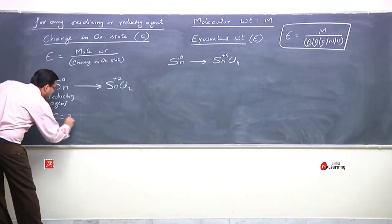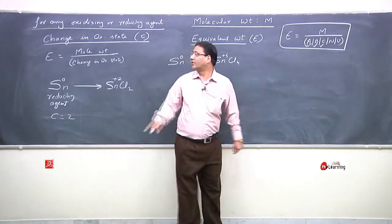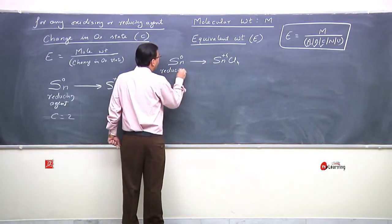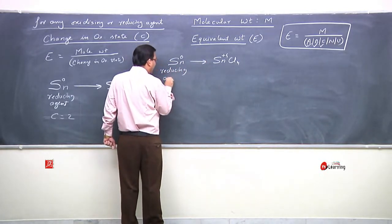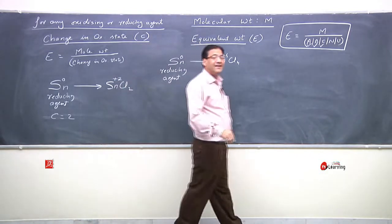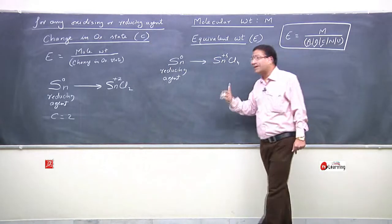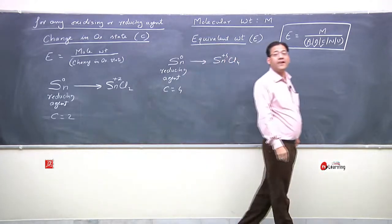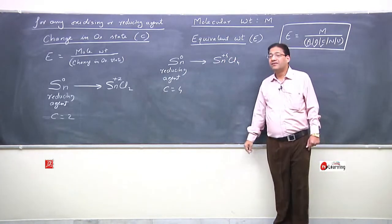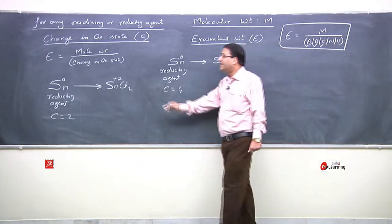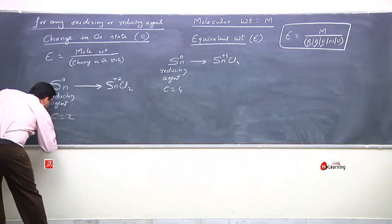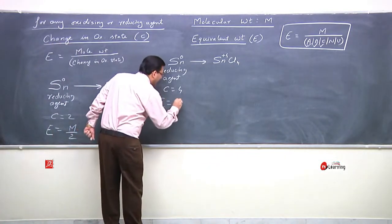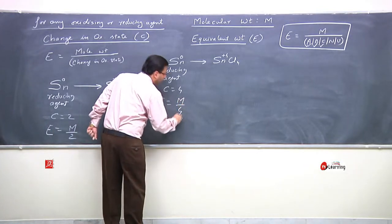For this reducing agent, in the first reaction the change in oxidation state is 2, because it goes from 0 to +2. In the second reaction, tin is still a reducing agent, but the change in oxidation state is 4, going from 0 to +4. So in this reaction, equivalent weight of tin is defined as molecular weight upon 2, while in the other reaction, equivalent weight is defined as molecular weight upon 4.